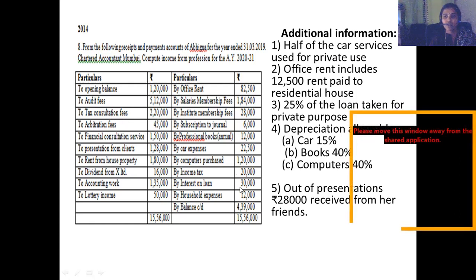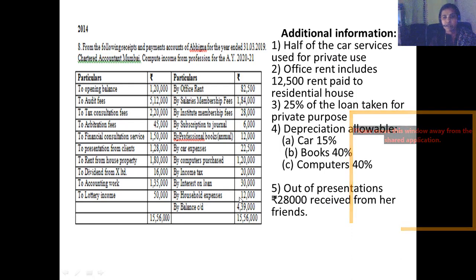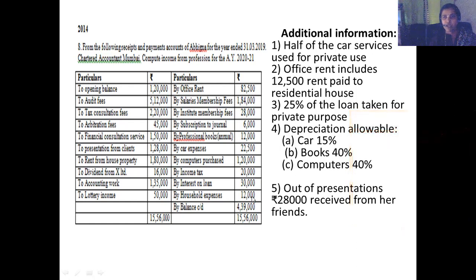Interest on loan — the purpose of the loan is important. 25% is for private purpose, so 75% of the interest is related to profession. Household expenses are not related to profession and do not constitute professional expenditure.